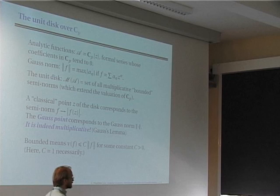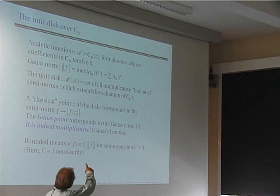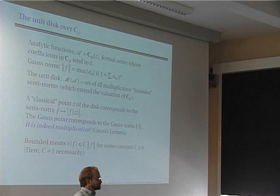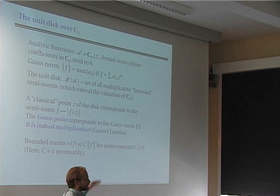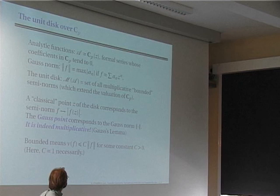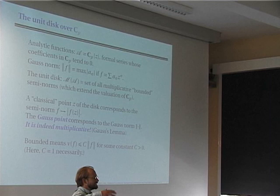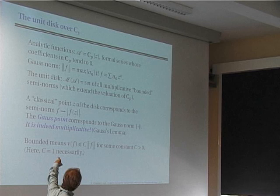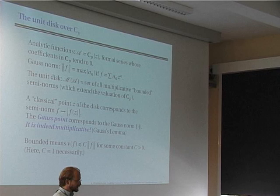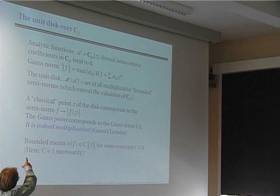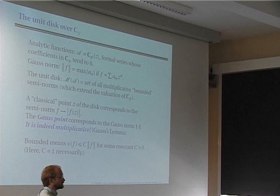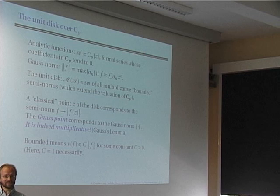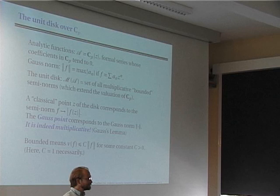Classical points of the disk correspond to the semi-norm f ↦ |f(z)| for z in the disk: you evaluate any function f ∈ A at the point z and take the absolute value, giving a multiplicative semi-norm. The Gauss norm itself is multiplicative (by Gauss's theorem), so it gives a new point of this Berkovich space — the Gauss point. So you have at least the classical points plus one new point.